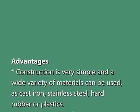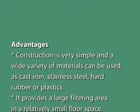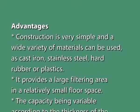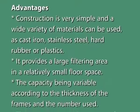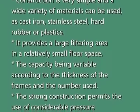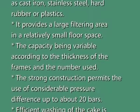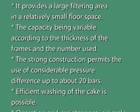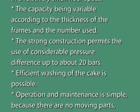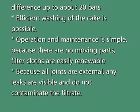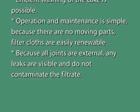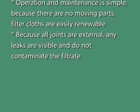Advantages of the filter press include very simple construction with a wide variety of materials such as cast iron, steel, hard rubber or plastic. It provides a large filtering area in a relatively small floor space, with capacity variable according to the thickness of the frames and number used. The strong construction permits the use of considerable pressure differences up to about 20 bars. Efficient washing of the cake is possible. Operation and maintenance is simple because there are no moving plates, and filter cloths are easily renewable because all joints are external.